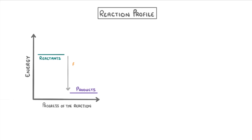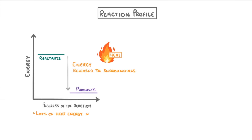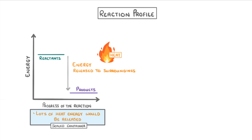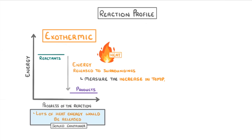Now if the chemicals in the reaction have lost this much energy, then this much energy must have been released to the surroundings, because energy can't be created or destroyed — it can only be transferred from one place to another. The most common way to exchange energy with the surroundings is in the form of heat. In this reaction lots of heat energy would be released, so if we had done it in a sealed container, we'd be able to measure the increase in temperature as the reaction progresses. We call reactions like this exothermic, and what all exothermic reactions have in common is that they transfer energy to the surroundings, usually in the form of heat.